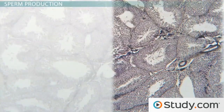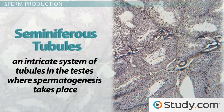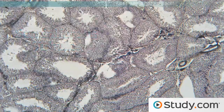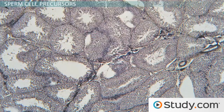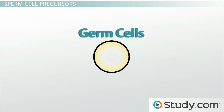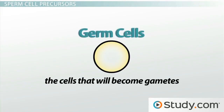In humans, spermatogenesis takes place in the seminiferous tubules, which are an intricate system of tubules in the testes. The seminiferous tubules of an adult human male can sometimes produce over 100 million sperm per day. In order to produce such a huge number of sperm, the tubules contain a very large and active population of dividing, self-sustaining germ cells, which are the cells that will become gametes.